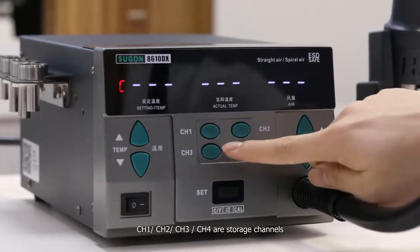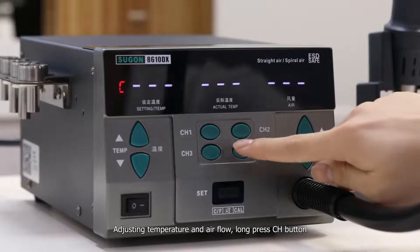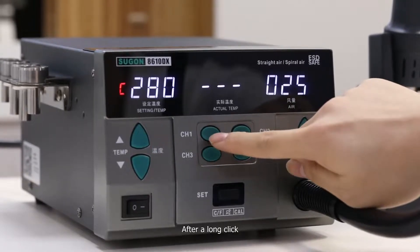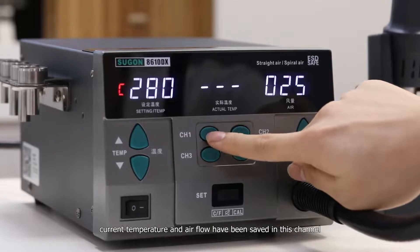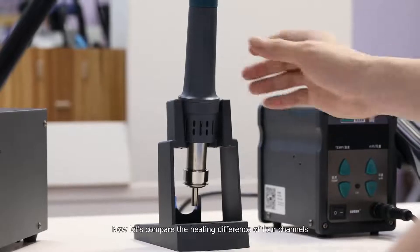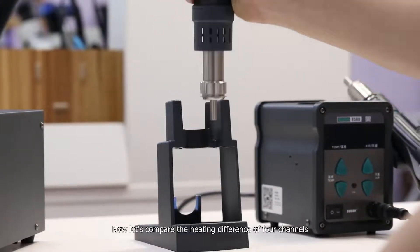CH1 to 4 are storage channels. Adjusting temperature and airflow, then press CH button. After a quick click, current temperature and airflow have been saved in this channel. Now let's compare the heating difference of four channels.